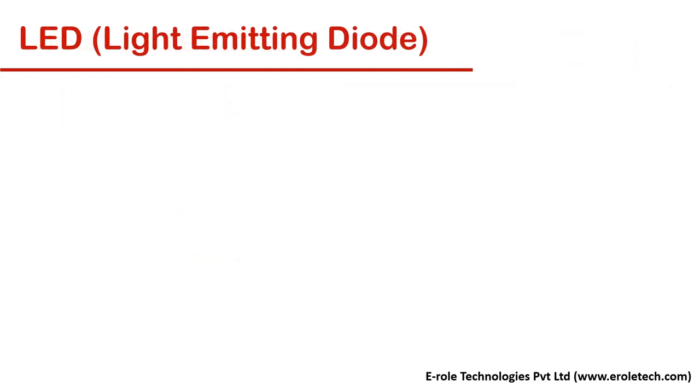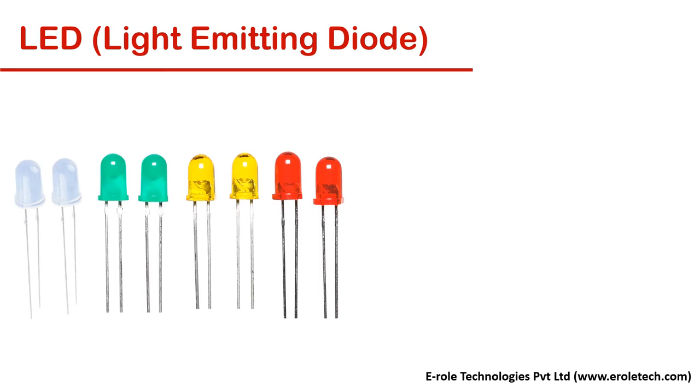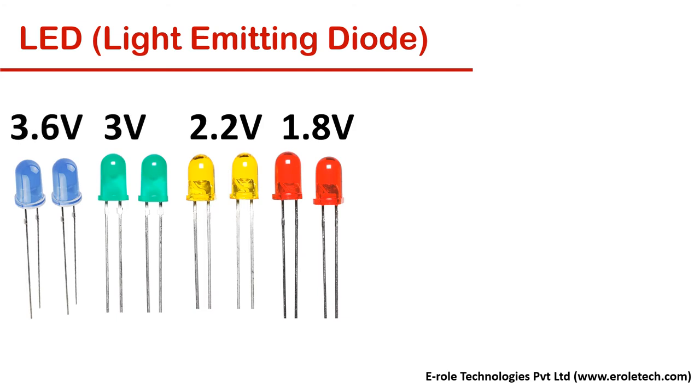LEDs, light emitting diodes. They are available in different size, packages and colors. Every color has different turn-on voltage, like red LED needs 1.8 volt to turn on, yellow needs 2.2 volts, green needs 3 volts, and blue LED needs 3.6 volts.